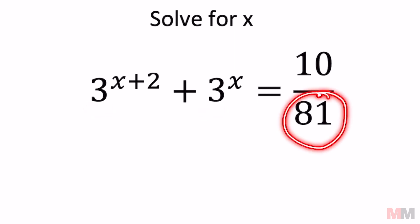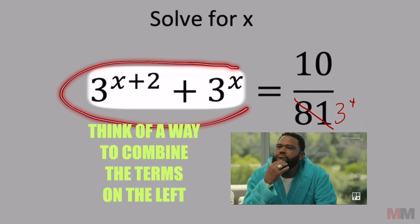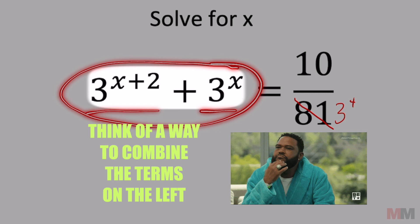81 can be written as base 3 because 81 is the same thing as 3 to the 4th power. So let's go ahead and change that 3 to the 4th. 10 we can't really do anything with yet. And on the left side I got to figure out how to combine these two expressions somehow.